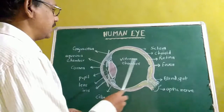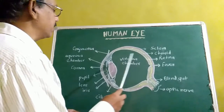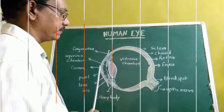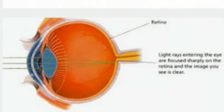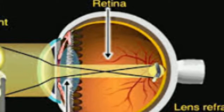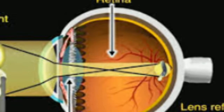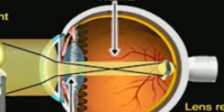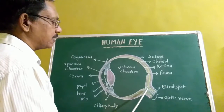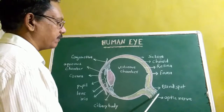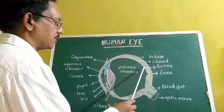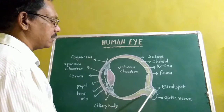The second part is the receptor part, which comprises of the retina. The image formed on the retina is inverted and smaller. Light rays focused on the retina generate impulses, and these impulses are carried by the optic nerve to the brain, where they are analyzed and the image formed on the retina is recognized.